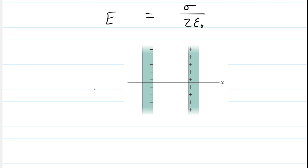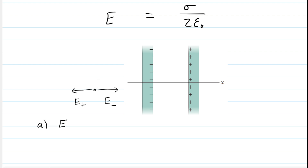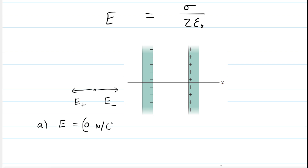In part A, we calculate the electric field at a point to the left of the negative sheet of charge. The negative sheet creates an electric field pointing towards it, called E-negative. The positive sheet creates an electric field pointing away from it, so pointing to the left. Those two vectors cancel each other out, because the electric field only depends on the surface charge density, which is the same for both sheets. Therefore, the net electric field to the left is zero newtons per coulomb — in unit vector notation, 0 î.